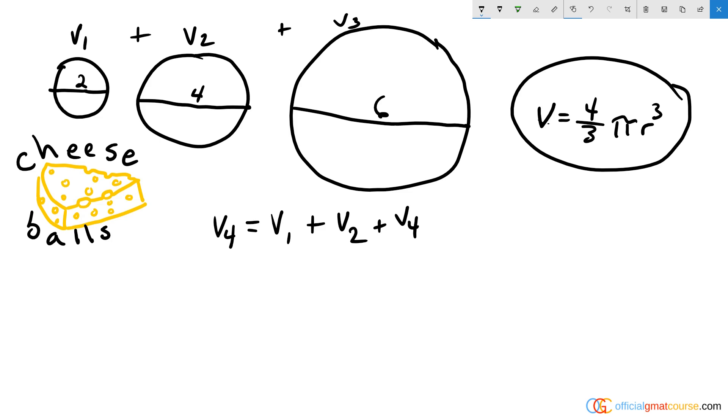If I have diameters of two, four, and six, that means that the volumes of these three cheese balls are four-thirds pi times the radius cubed, and the radius is going to be one, two, and three. So we get four-thirds pi times one cubed, which is just one, plus four-thirds pi times two cubed, which is eight,